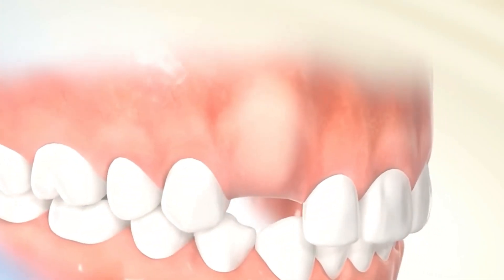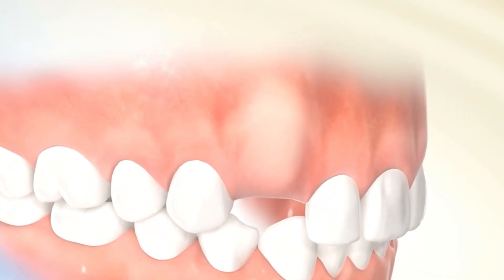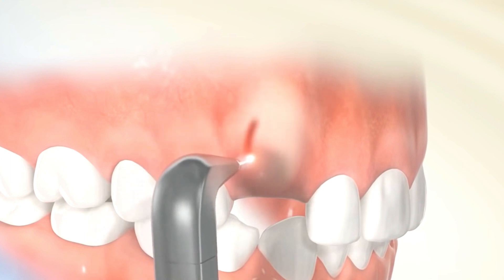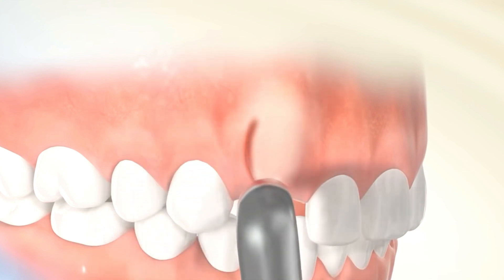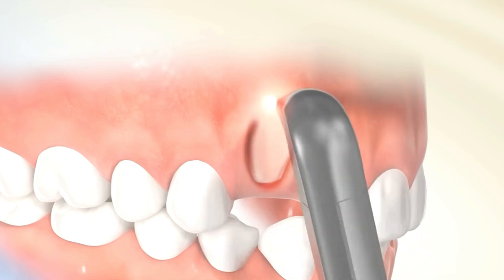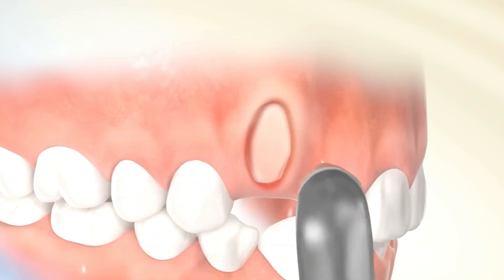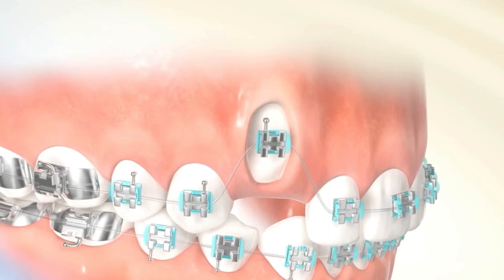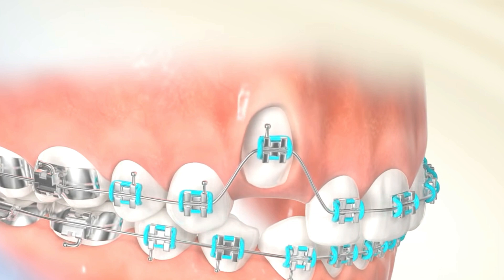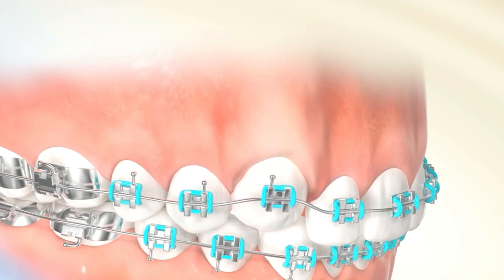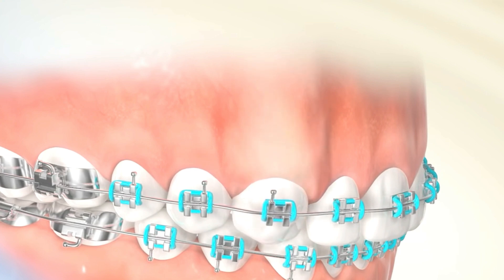Another minor surgical procedure is laser exposure, used when the impacted canine is buccally placed. The labial mucosa is removed with laser and the canine surface is exposed. An attachment is then bonded to the canine and the tooth is brought into the arch.